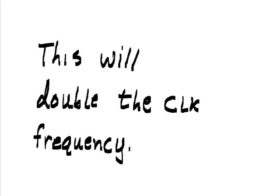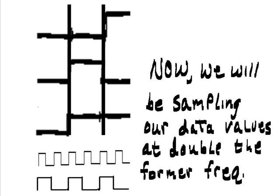This will double the clock frequency. Now we will be sampling our data values at double the former frequency.